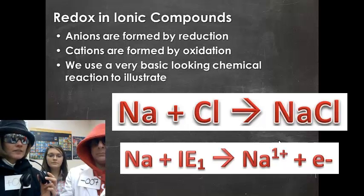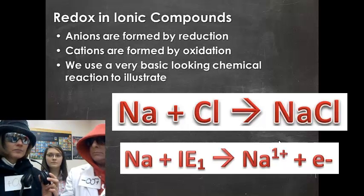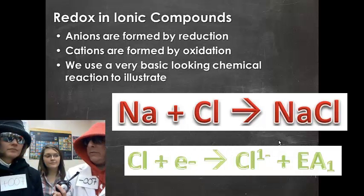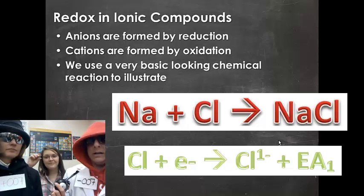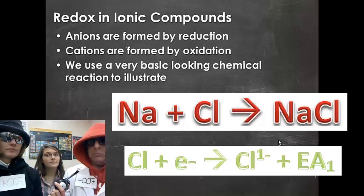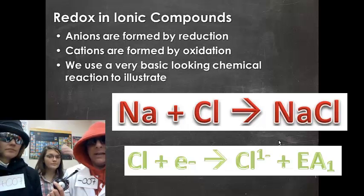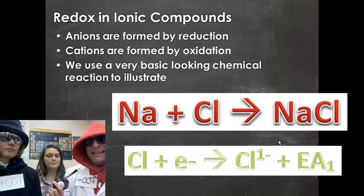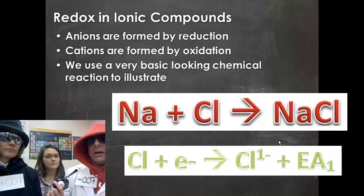Losing that valence electron is oxidation — that's going to make a positively charged cation. At the same time, you have chlorine with seven valence electrons, really energized, looking to get one more electron. With sodium nearby giving that electron away, chlorine snatches that up and releases a certain amount of energy — you recall it's called the electron affinity. Chlorine absorbs that electron and becomes a chloride anion.